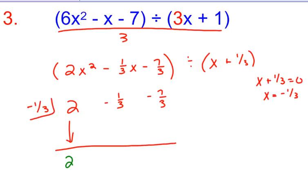2 times a -1/3 would be -2/3. -1/3 plus -2/3 would be -1. -1 times a -1/3 would be 1/3. -7/3 plus 1/3 is -6/3, which is really -2, right? So there's my remainder.